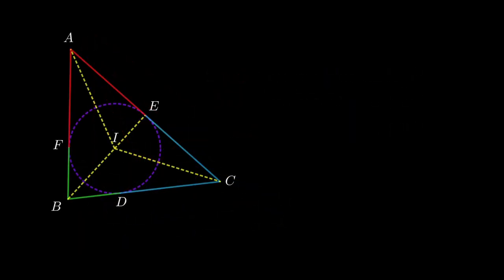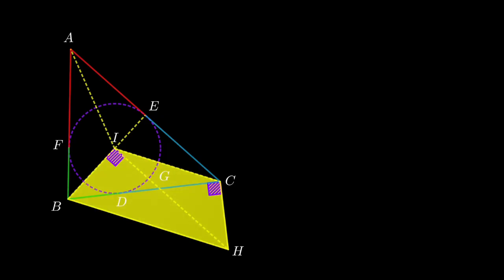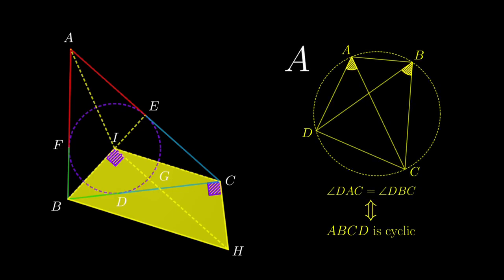Okay, now we deliberately create a cyclic quadrilateral, by constructing these perpendicular lines, which intersect at H, and then denote the intersection of IH and BC to be G. Then the quadrilateral ICHB would be cyclic, because the two purple angles are the same, and we have property A.